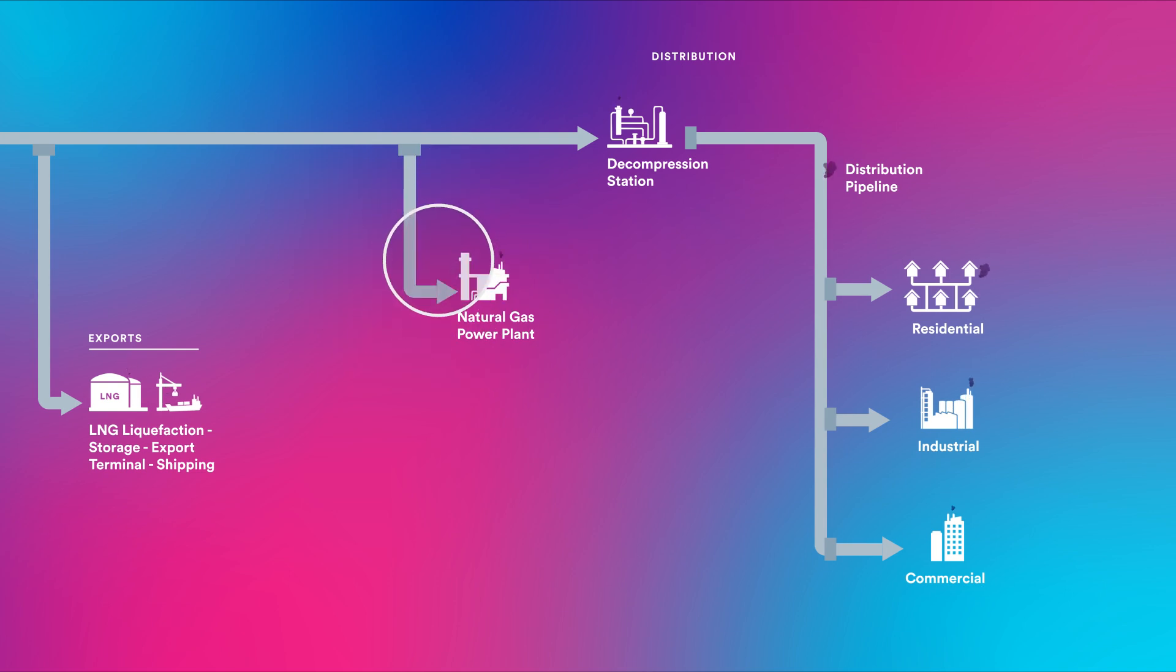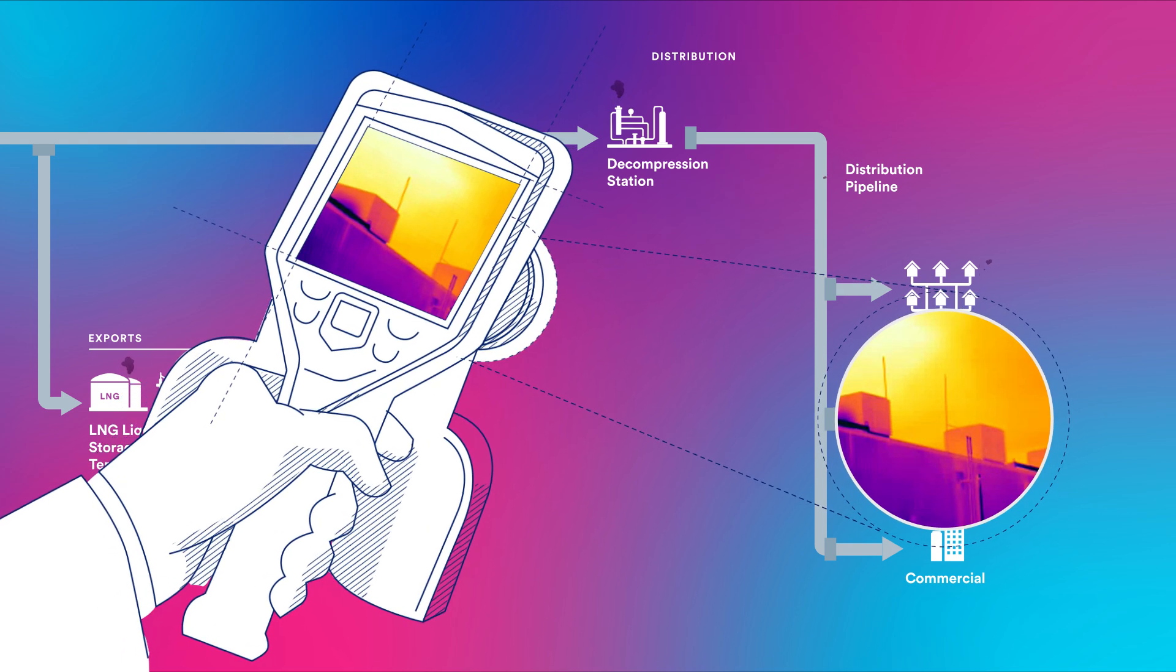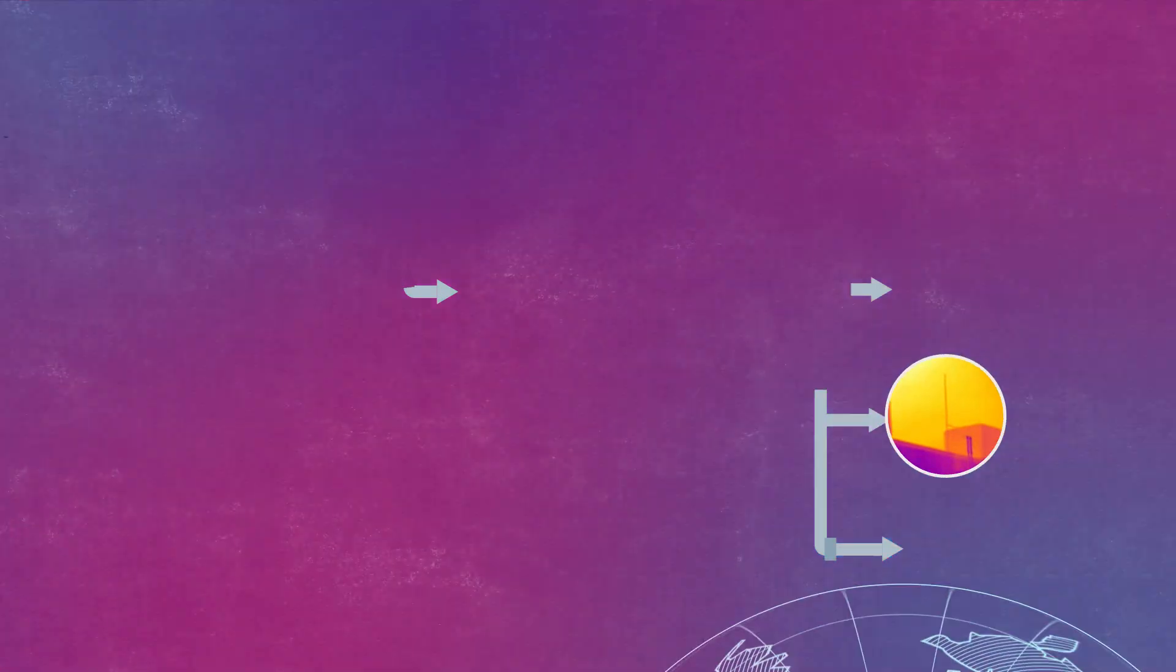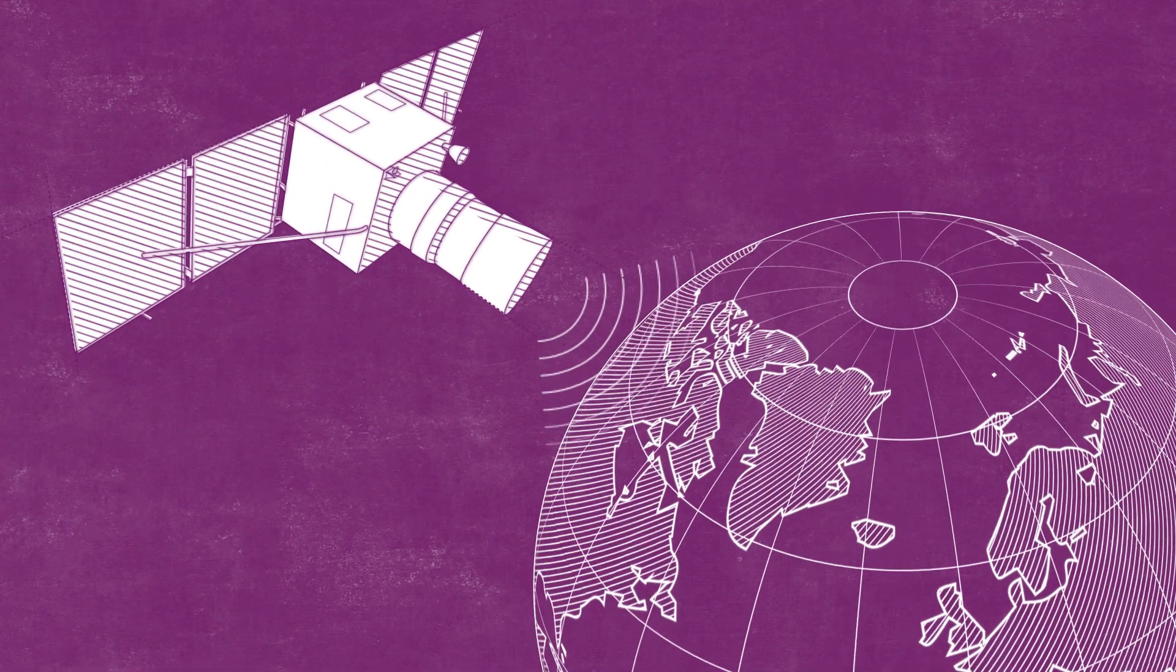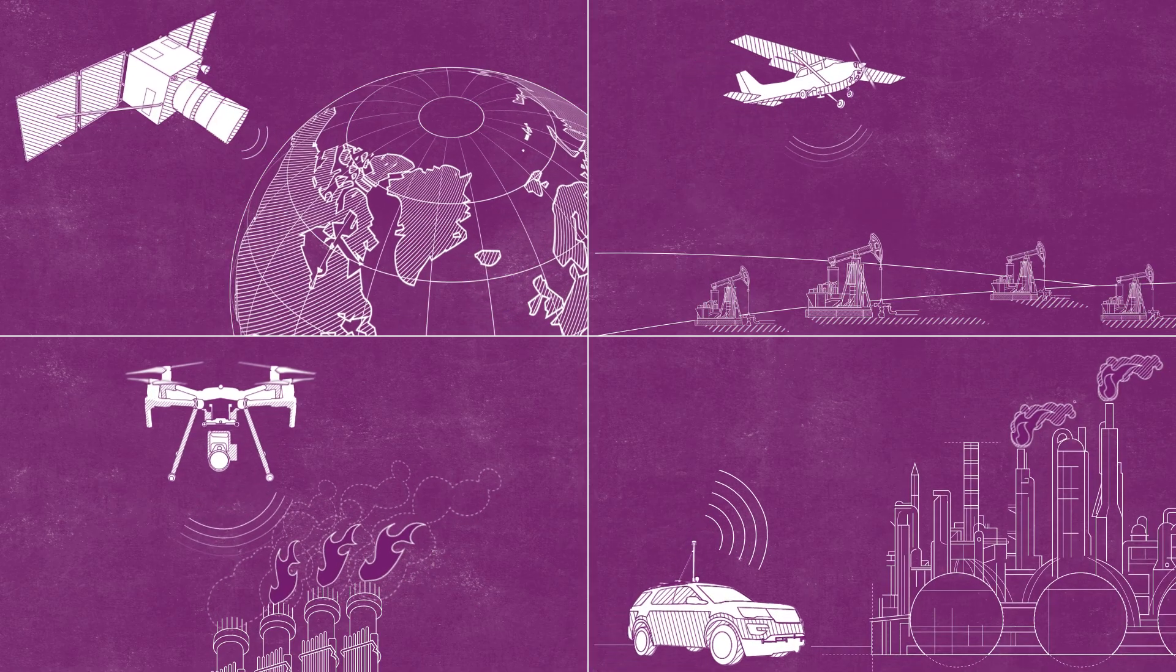The good news is detecting methane is pretty straightforward. There's modern technology like handheld cameras and sensors that help detect methane leaks on the ground, and innovative and emerging technologies mounted on satellites, airplanes, drones, and cars that can detect these leaks remotely.